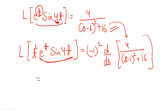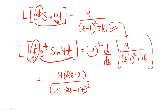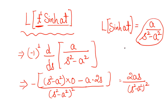Now for t·e^t·sin(4t): since t to the power 1 is present, the Laplace transform is minus 1 to the power 1 times d over ds of F(s), where F(s) is 4 over (s minus 1)² plus 16. Differentiating this once gives 4 times 2(s minus 2), over (s² minus 2s plus 17) whole squared. For further practice, if t squared is used instead of t, you differentiate one more time, and minus 1 to the power 2 gives a positive value.